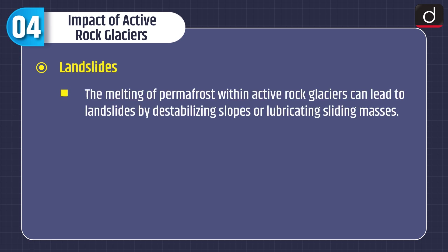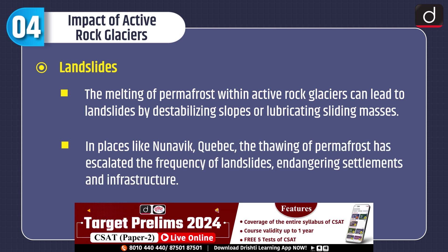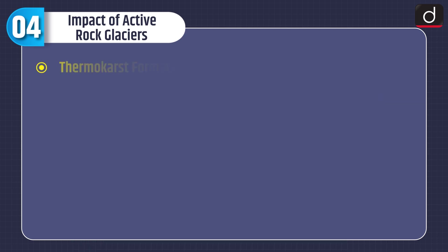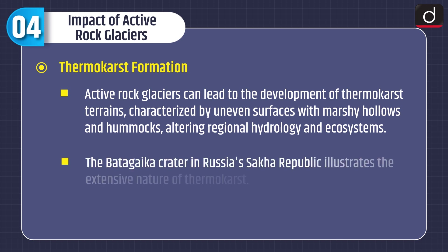Regarding landslides: the melting of permafrost within active rock glaciers can lead to landslides by destabilizing slopes or lubricating sliding masses. In places like Nunavik, the thawing of permafrost has escalated the frequency of landslides, endangering settlements and infrastructure. Thermokarst formation: active rock glaciers can lead to the development of thermokarst terrains characterized by uneven surfaces with marshy hollows and hammocks, altering regional hydrology and ecosystems. The Batagaika crater in Russia's Sakha Republic illustrates the extensive nature of thermokarst.